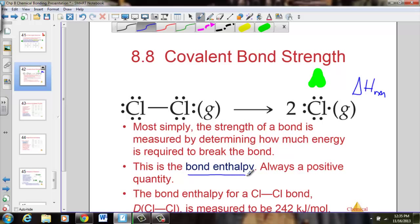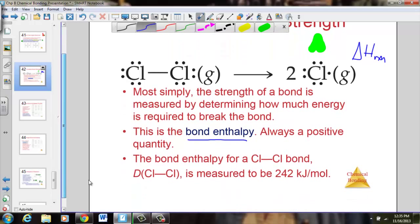Bond enthalpy is a measurement of the strength of a covalent bond. The more energy it takes to break the bond, the stronger the bond was. A single bond compared to a double bond compared to a triple bond—it takes more energy to break a triple bond than a double bond than a single bond. The amount of energy for breaking bonds is known as bond enthalpy.